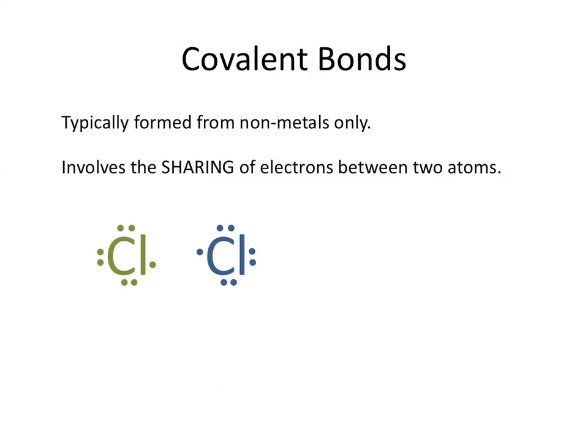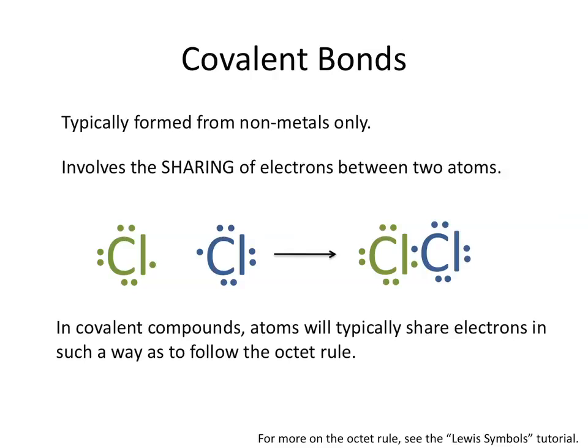In the example of a chlorine-chlorine bond, instead of one chlorine atom giving its electron to the other like in NaCl, each chlorine atom will share one of its electrons to form a covalent bond.